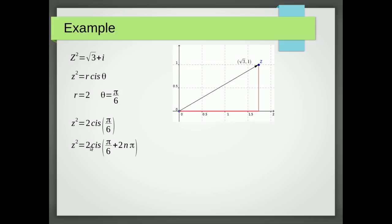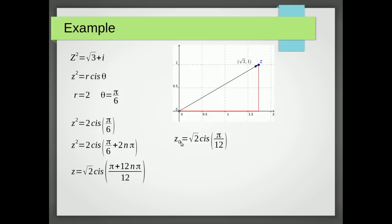Now using De Moivre's theorem we're going to square root the 2, and then multiply the argument by a half because square root is the power of a half. So that becomes √2 cis((π + 12nπ) / 12). I could have written this as π/12 + nπ and we'd get the same result. Using consecutive values n = 0 and n = 1: when n = 0 we get √2 cis(π/12); when n = 1 we get 12π + π = 13π, giving √2 cis(13π/12).